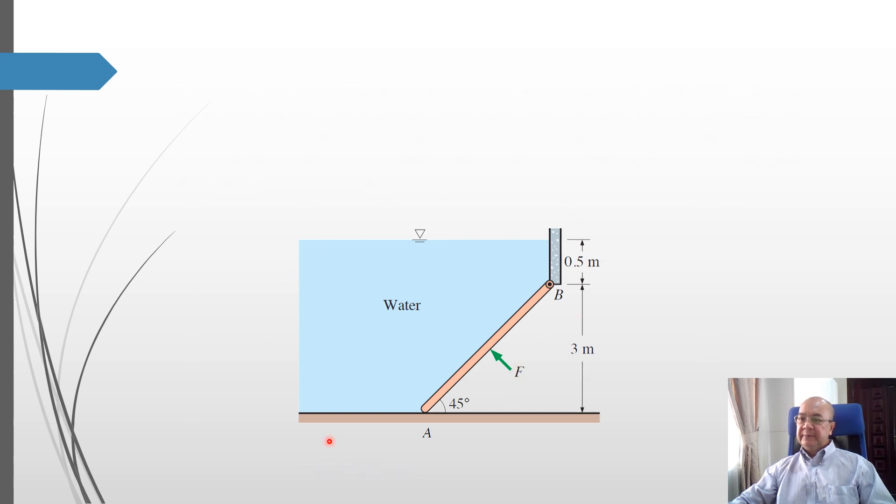So this is the diagram. We are asked to calculate the force F. We know that to obtain the value of F, we are going to apply the equation of equilibrium. We are going to choose point B and then for the equilibrium of moment. But before that, we need to know all forces applied to this gate. So let's draw the free body diagram.